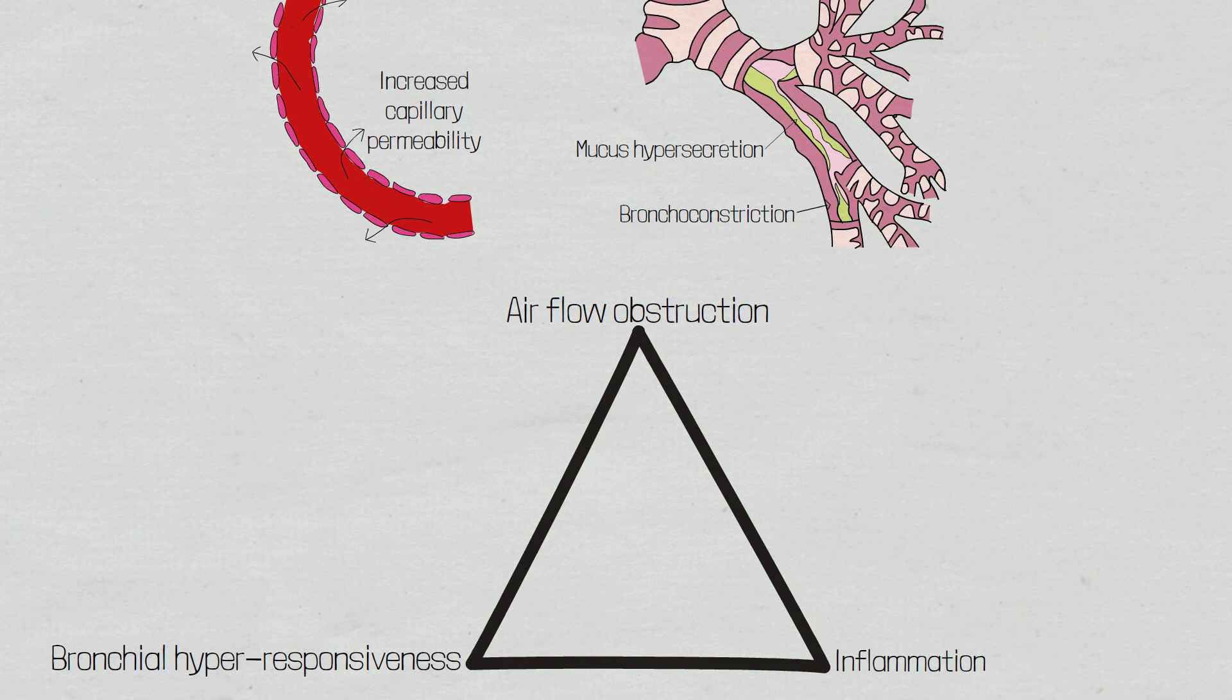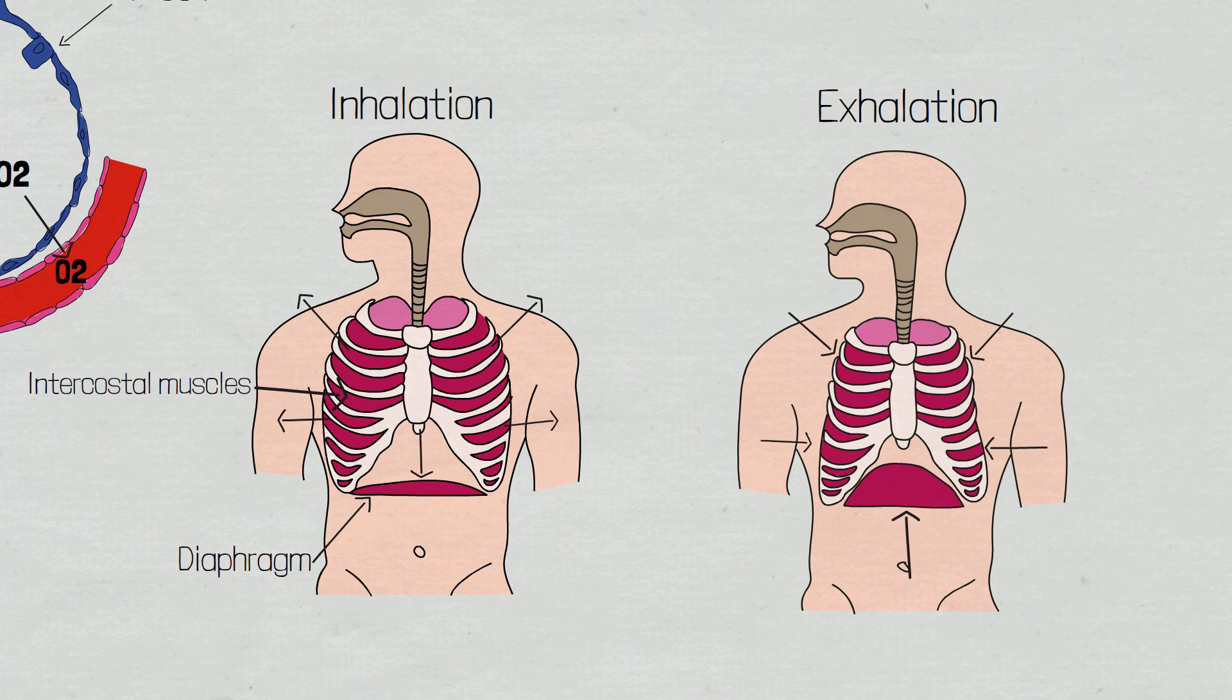This partial airway obstruction increases the resistance airflow has to overcome to adequately ventilate the alveoli, especially during expiration. As we discussed earlier, expiration is a passive process which involves the relaxation of respiratory muscles. During inspiration, these muscles can help overcome the narrowed airways but during expiration, there is no mechanical assistance.